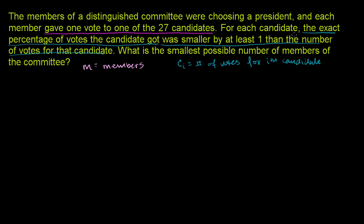Now let's work with the underlined condition. The exact percentage of votes the candidate got would be the votes they got divided by the total number of members — that gives a decimal. If you want it as a percentage, you multiply by 100. So that expression is 100 times c sub i over m.